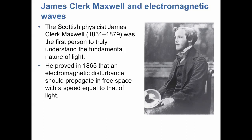In 1865, Maxwell showed that an electromagnetic disturbance — basically an electromagnetic wave — should propagate in free space with a speed equal to that of light. He was able to calculate the speed of the electromagnetic wave in vacuum, and that value happened to be exactly the same as the speed of light. He put together a set of equations, used them to calculate the speed of the electromagnetic wave, and then realized that electromagnetic waves and light are the same thing.